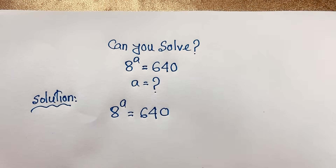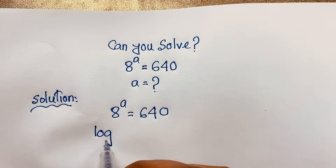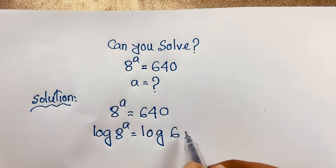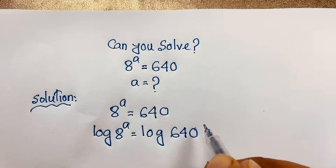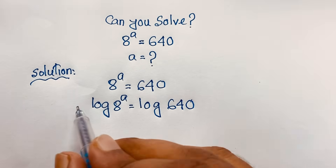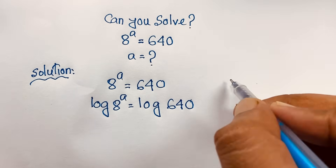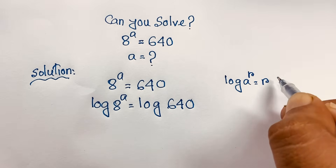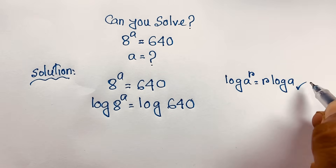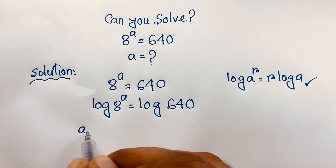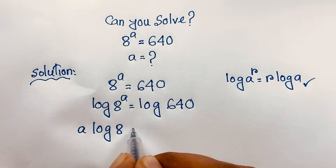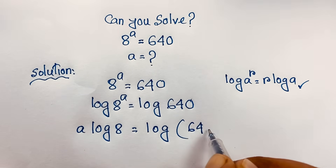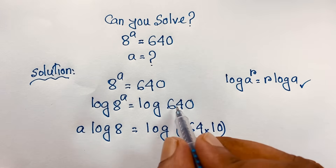Now I apply the natural log to both sides: log(8^a) = log(640). Using the logarithm power rule — log(r^a) = a·log(r) — we bring the exponent a to the front: a·log8 = log(640). And 640 equals 64 times 10.